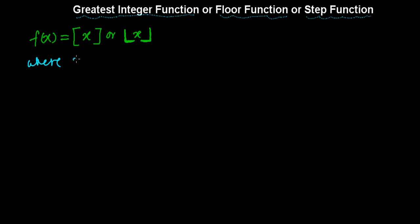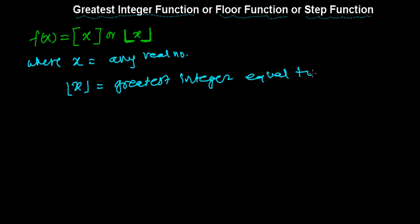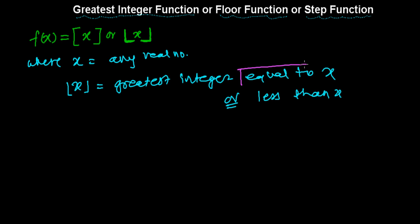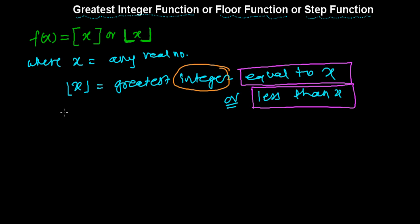Here, x can be any real number. When we put this real number into the floor function symbol, it represents the greatest integer equal to x or less than x. The floor function of x always gives an integer — always — and that integer is equal to x or less than x.